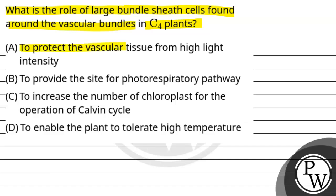First option is to protect the vascular tissue from high light intensity. Second is to provide the site for photorespiration pathway. Third, to increase the number of chloroplasts for the operation of Calvin cycle. And fourth, to enable the plant to tolerate high temperature.